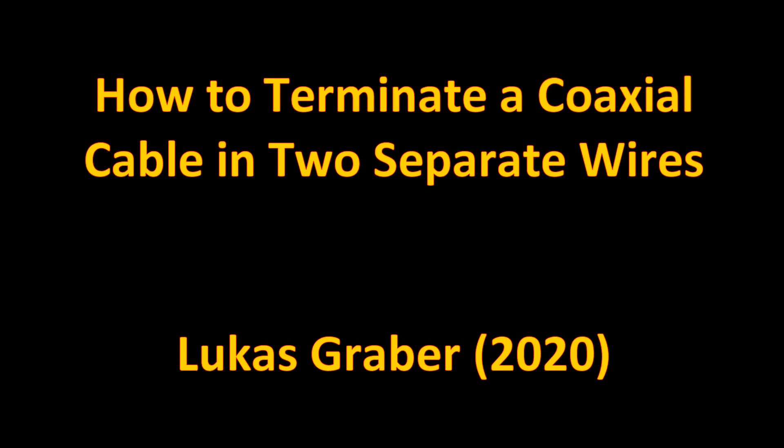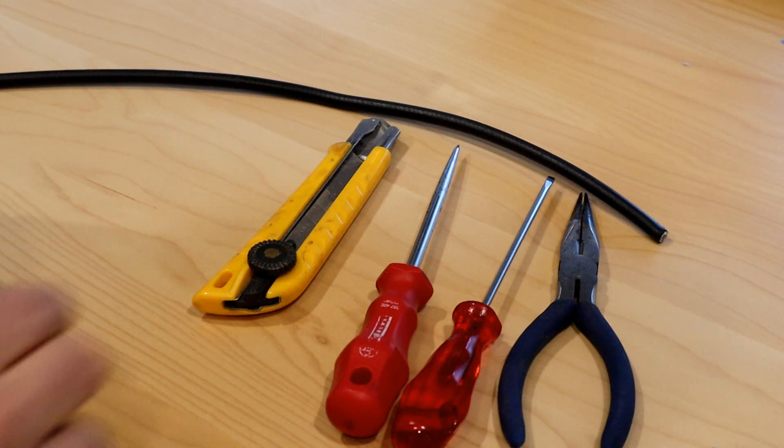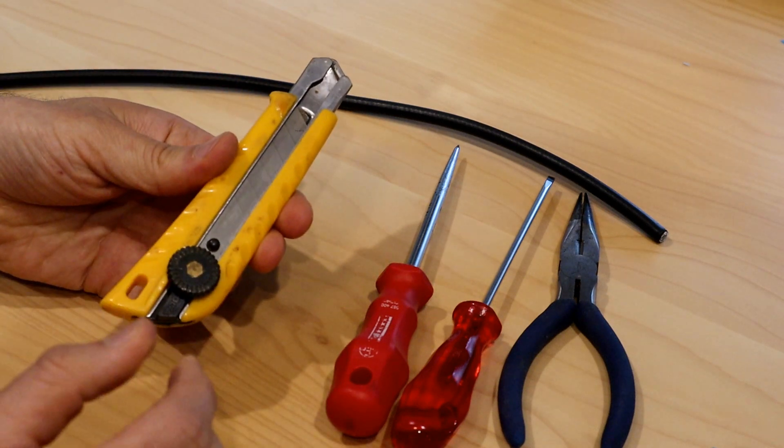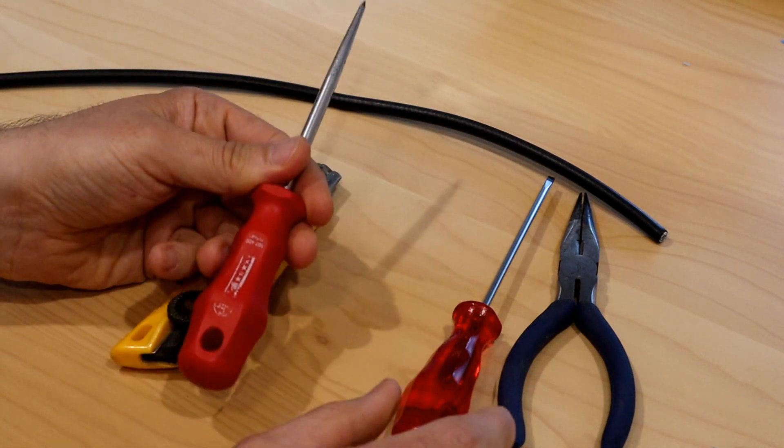How to terminate the coaxial cable in two separate wires. You need a knife, an awl, a flathead screwdriver and some pliers.